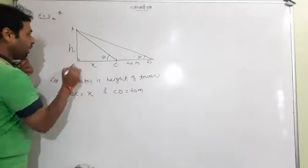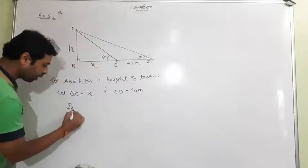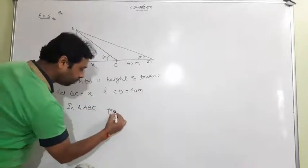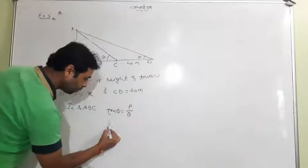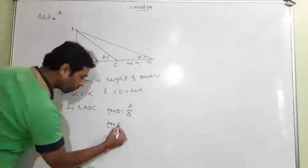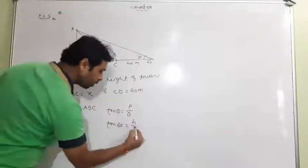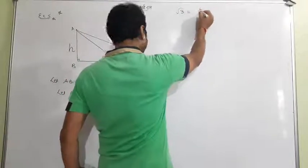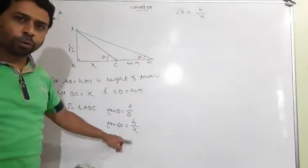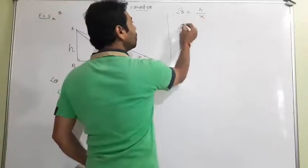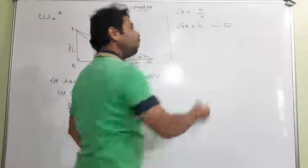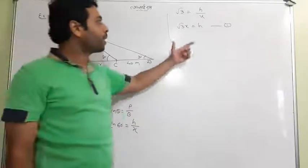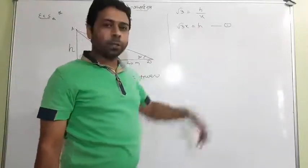First I will take the small triangle ABC. In triangle ABC, I go with tan θ equals perpendicular upon base, so θ is 60 degrees, perpendicular is H, and base is X. So tan 60 equals √3, giving us √3 = H/X. By cross multiplication we get H = √3·X. This is Equation 1.